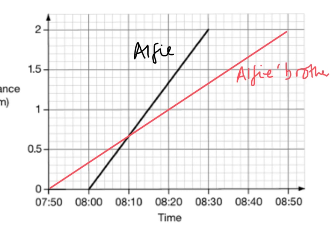So here's the line. The red line is Alfie's brother. He left 10 minutes before Alfie, so he left at 7:50, and he arrived at school — remember that's two kilometres away — he arrived at 8:50, which is 20 minutes later than Alfie, who arrived at 8:30. So this red line represents Alfie's brother walking to school.